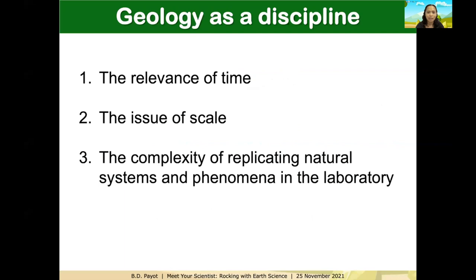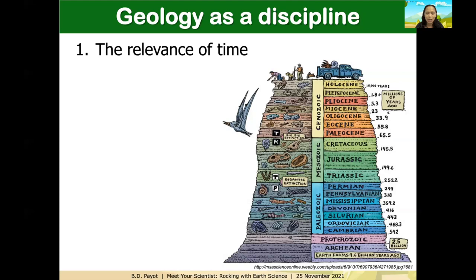Geology as a scientific discipline tries to address at least three important issues. The first is the relevance of time. For geologists, it's important to look at present conditions and use that knowledge to correlate with what possibly happened in the earth's past. This figure shows the geologic time scale — a cartoon showing the present-day setting all the way back to when the earth was first formed.